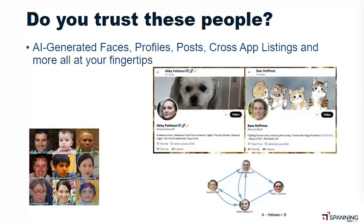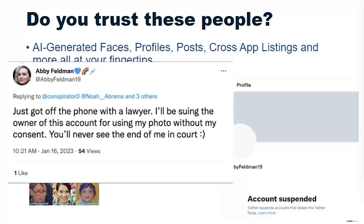AI can generate believable faces, accounts, and content, making it much harder to identify scammers. You might check LinkedIn or a blog, but if AI can fabricate a convincing identity, you could give up credentials or system access before realizing you've been scammed. People can also be tricked in their personal lives into sharing passwords that overlap with what they use in the organization.